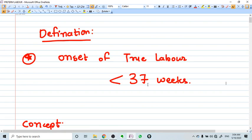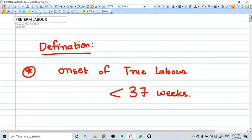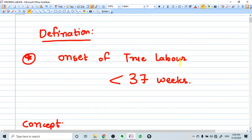Hey everyone, in this video we are going to talk about preterm labor. Very easy definition: onset of true labor less than 37 weeks. Very simple, less than 37 weeks, if there is true labor, it is preterm labor.